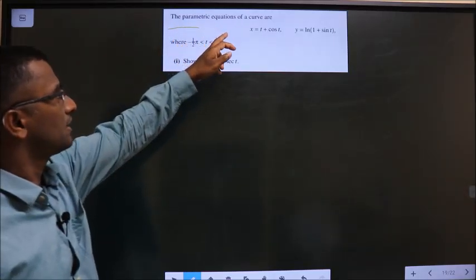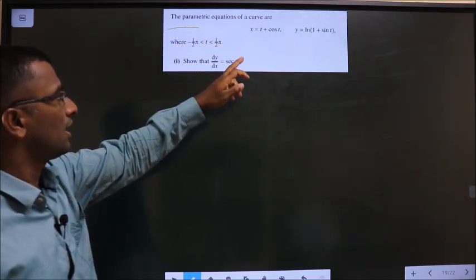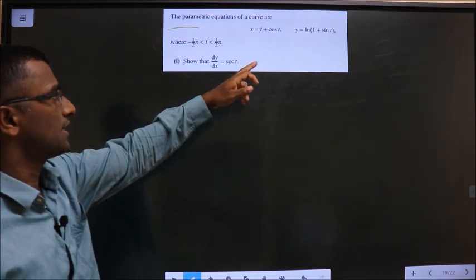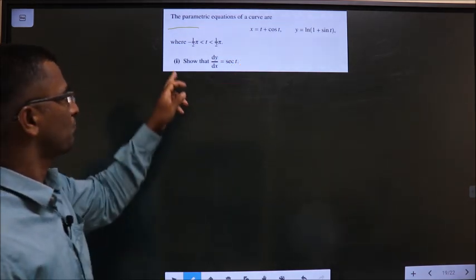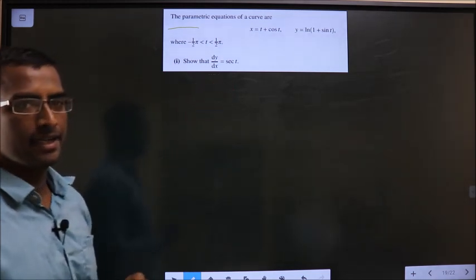The parametric equations of a curve are x equal to t plus cos t, y equal to ln brackets 1 plus sin t. Show that dy by dx equal to secant t.